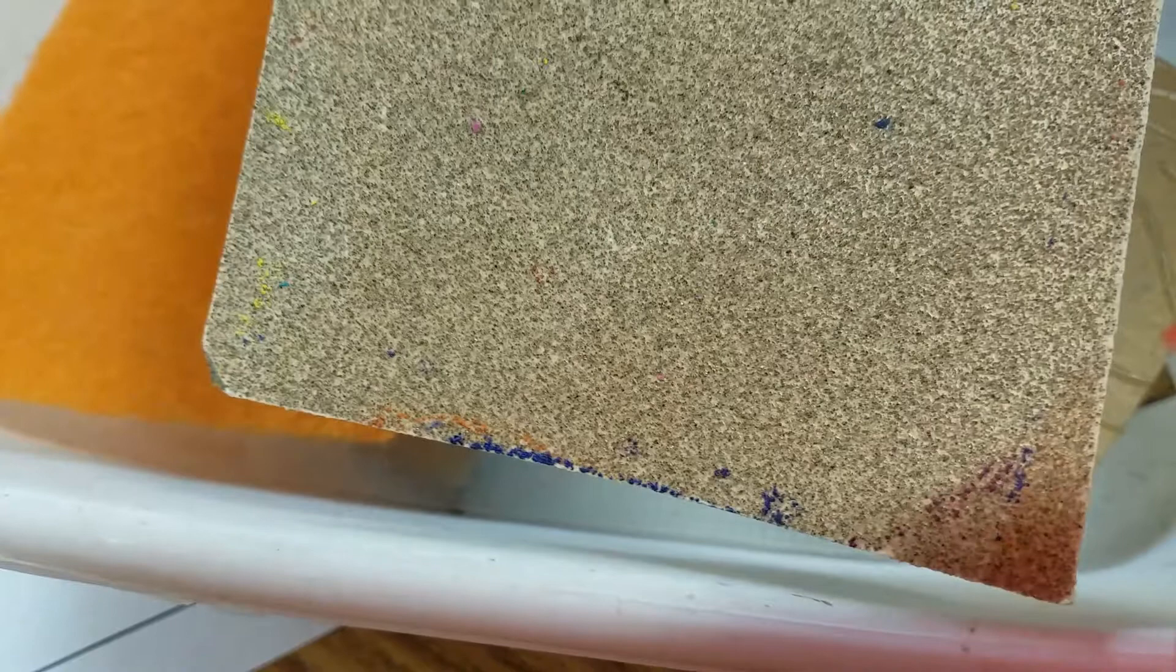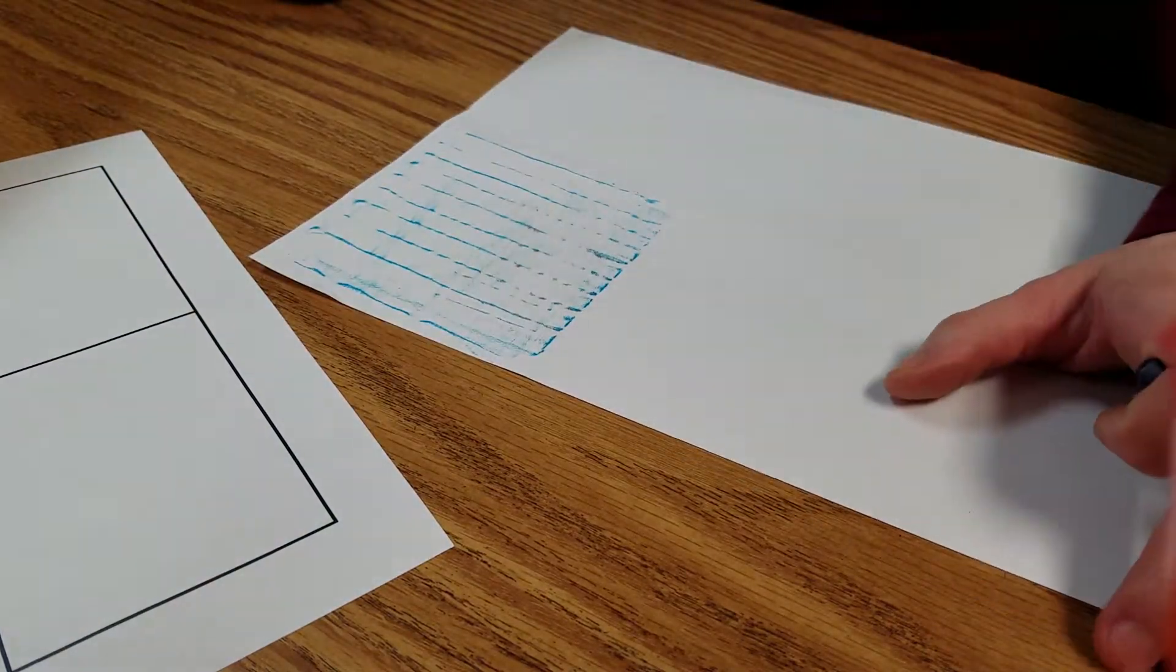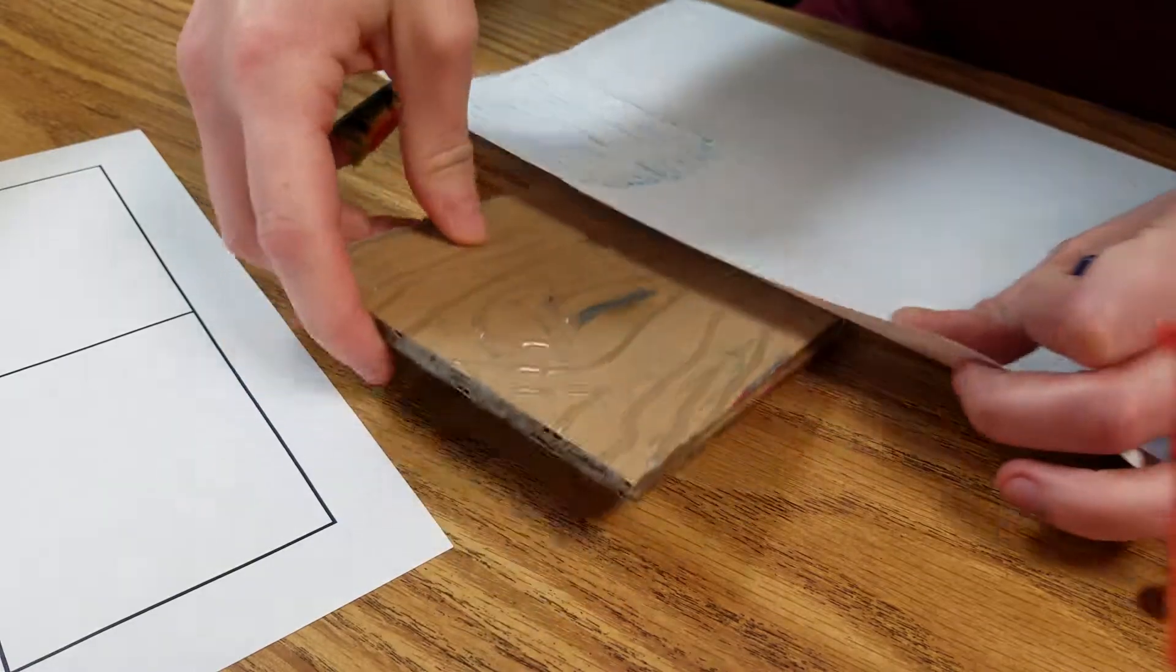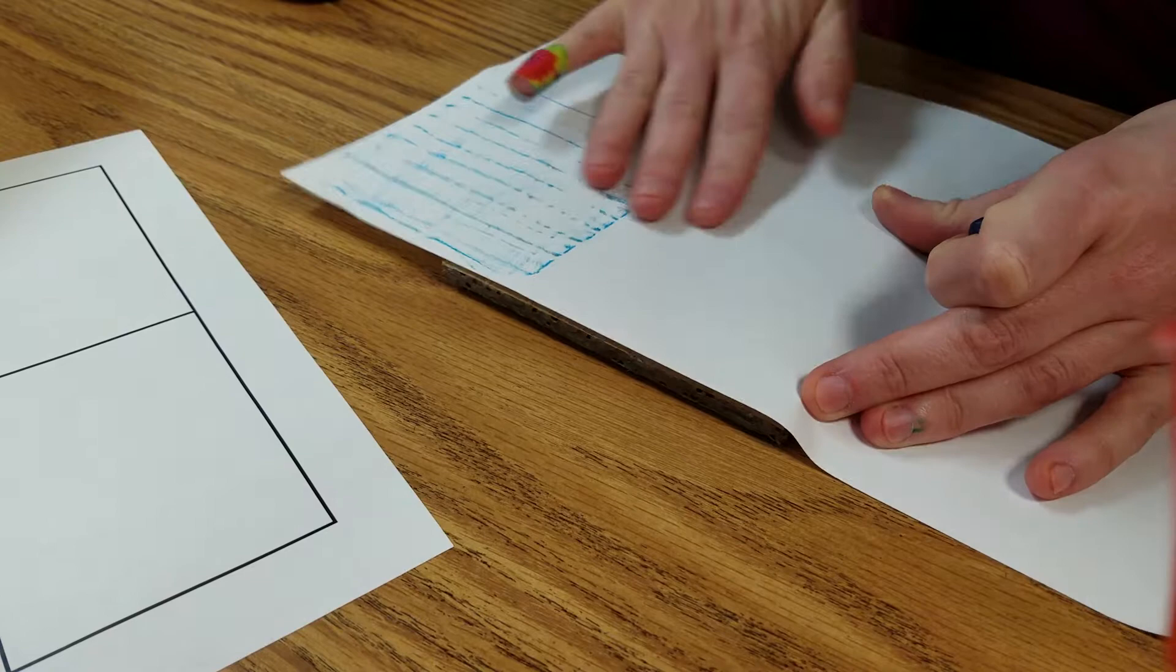So you're going to get your copy paper and you'll put your texture underneath your paper wherever you want it, and you feel to make sure it's where you want it.